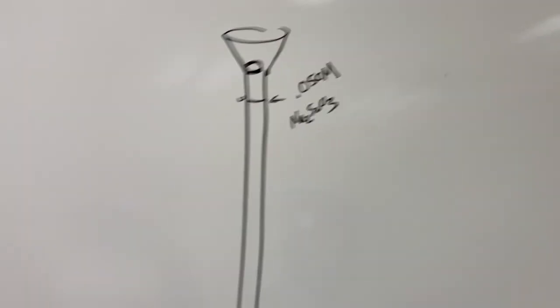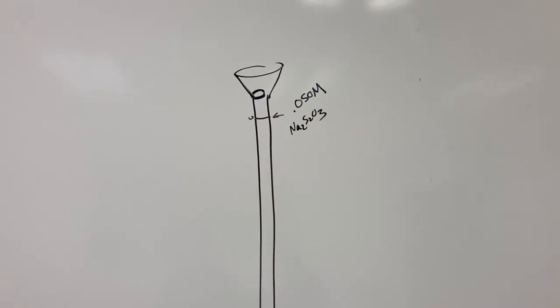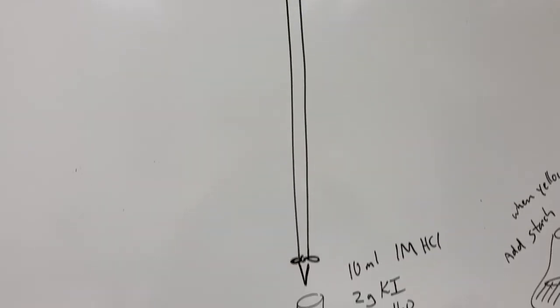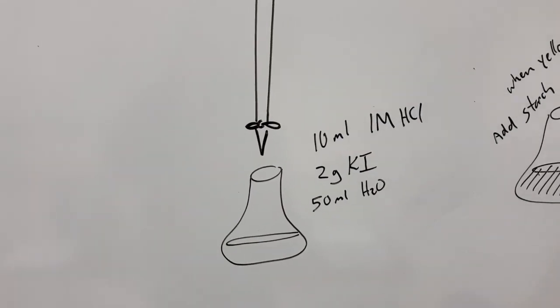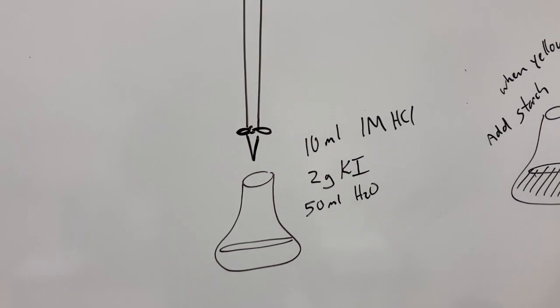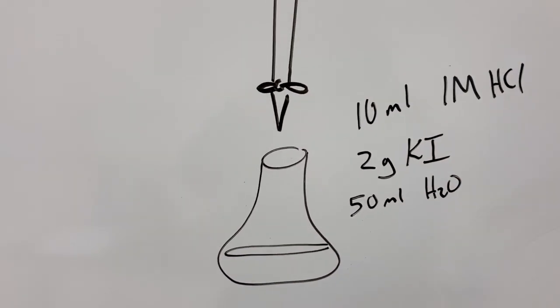So our setup in our burette, our titrant is going to be 0.05 molar sodium thiosulfate, and in the reaction flask we're going to add 10 milliliters of 1 molar HCl again for the acidic environment. We're going to have some water.